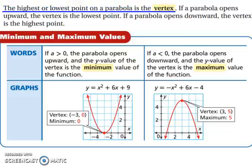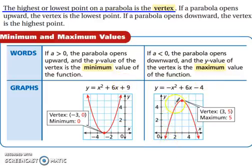The highest or lowest point on a parabola is the vertex. If a parabola opens upward, the vertex is the lowest point. If a parabola opens downward, the vertex is the highest point. If you have a minimum, it's the lowest point on the graph — the graph opens up so you have a minimum value with no maximum you can actually obtain. If the graph opens down, you have a maximum.